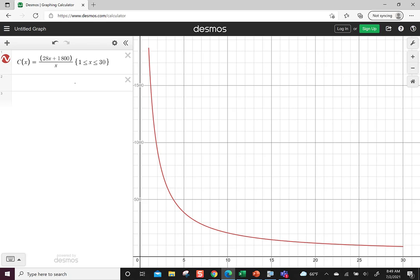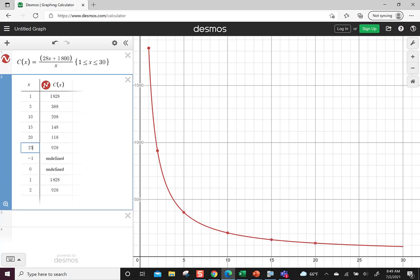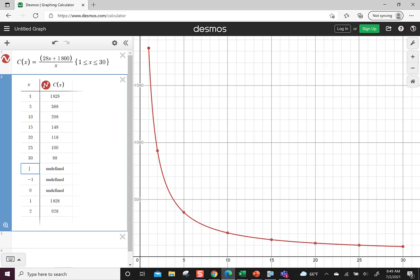Let's add a table of values to get a better look at what's happening. Start at 1, and let's go 5, 10, 15, 20, 25, 30 for our values of X. When I make one item, the average value is 1,828—that's the 1,800 plus the 28 to make one item. At 5, the average value is 388. At 10, it's 208—that's the 1,800 divided by 10, which is 180, plus 28. The more skateboards we make, the more we split up the fixed cost, and the average cost function is decreasing.